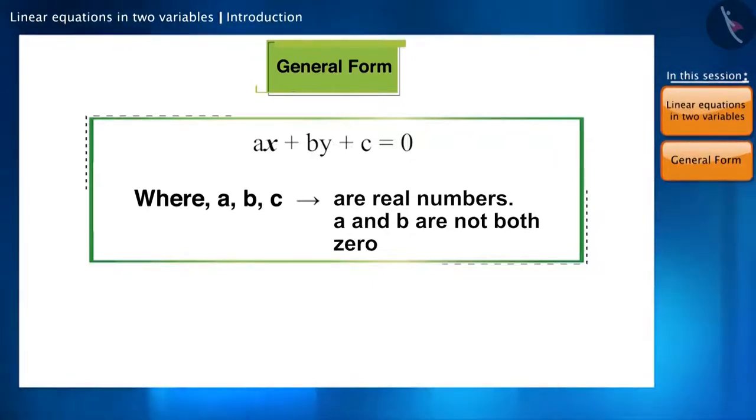Can you tell me why is this so? If both a and b become 0, both x and y term become 0. And we will be left with only a constant.